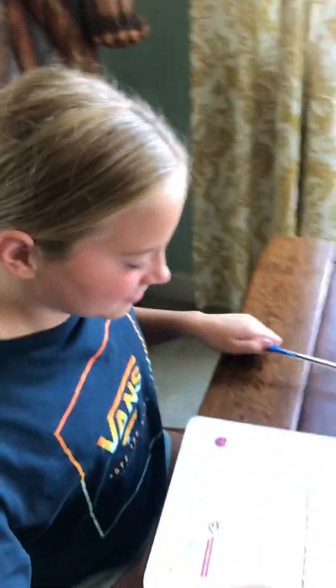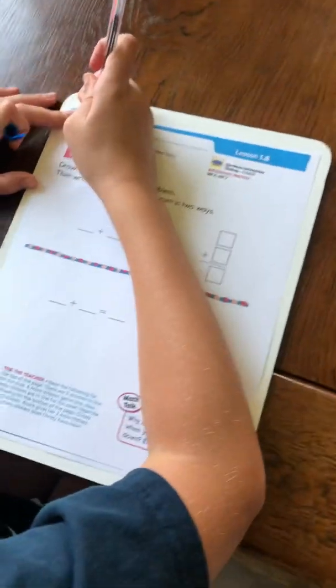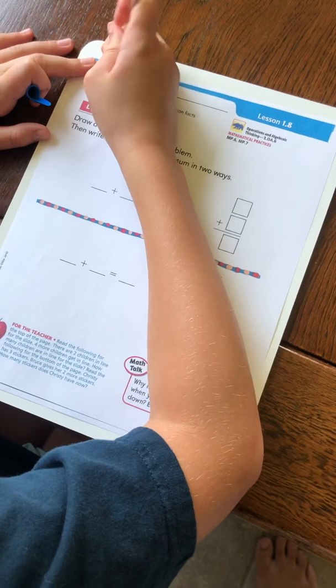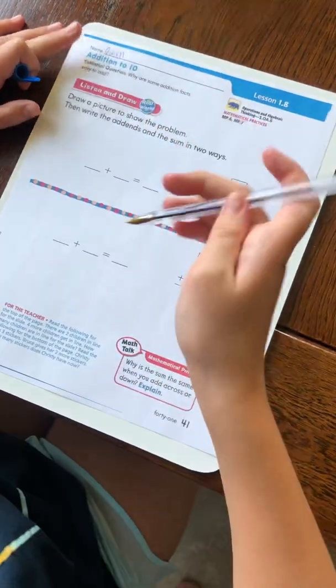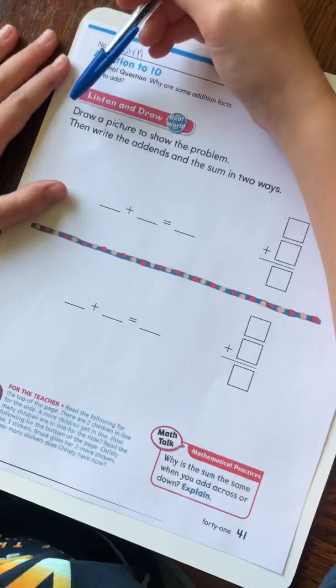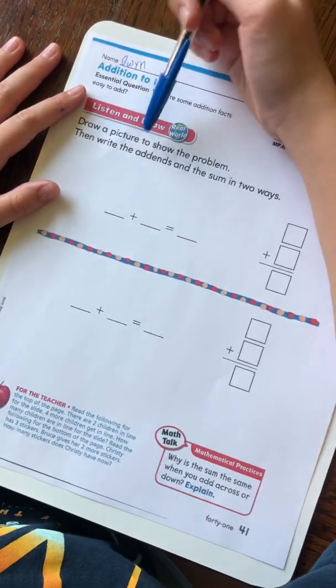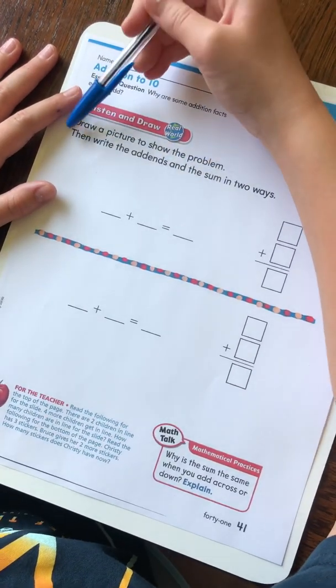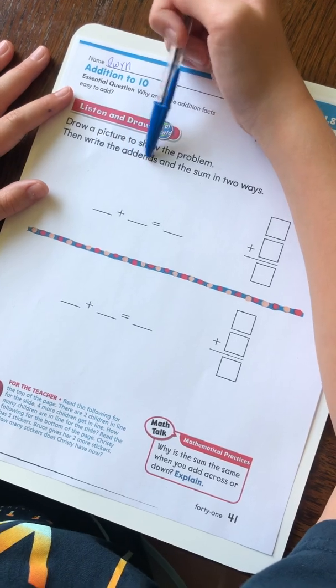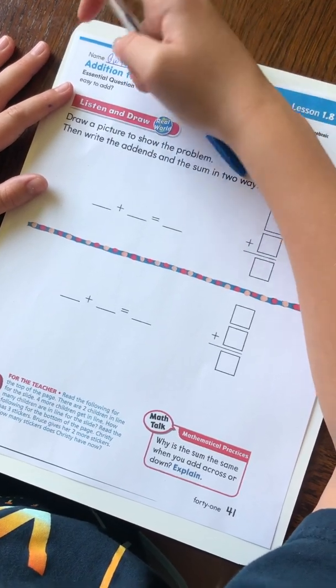First, I'm going to write my name at the top. Okay, now let's read the directions. Directions say, draw a picture to show the problem. Then, write the addends and the sum in two ways.